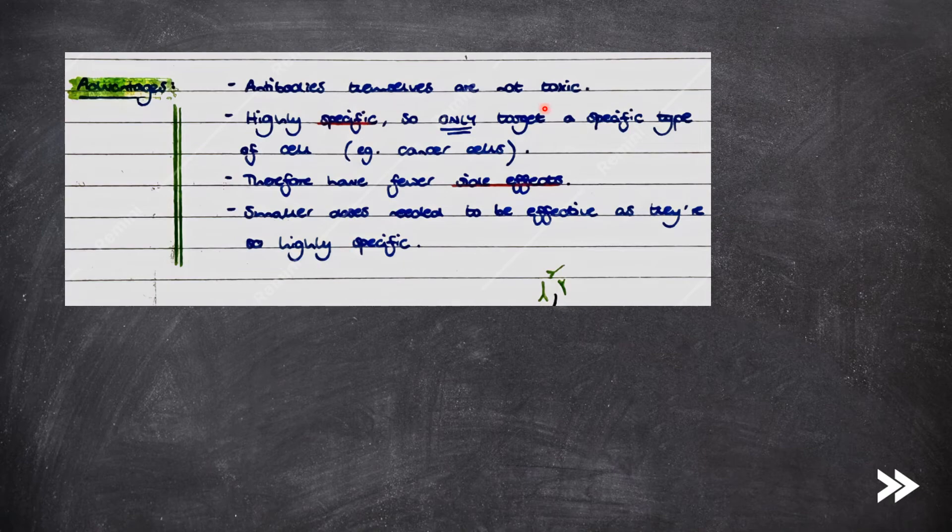So why are monoclonal antibodies so useful? Well, the antibodies themselves are not toxic. They are highly specific, so they only target a specific cell type, for example, cancer cells, and therefore they have fewer side effects. Also, smaller doses are needed to be effective because they are so highly specific.